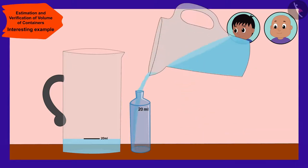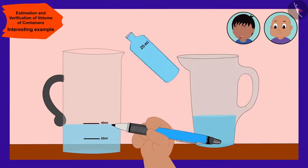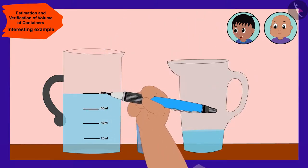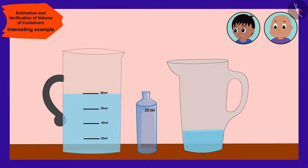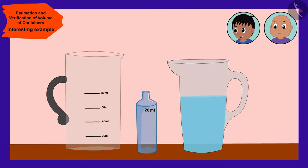Now, we will fill the bottle completely every time and empty it in the jug. Each time a mark will be made on the jug by adding 20 to the previous level of water. In this way, the marks on the jug will be made at 40, 60, 80 ml. See, Bablu, our measuring jug is ready.